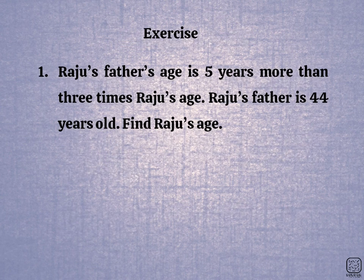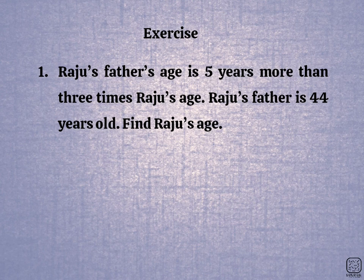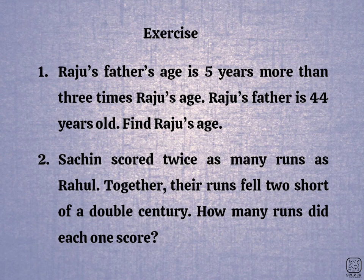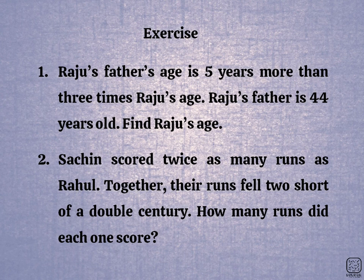How to solve this equation. Problem one: Raju's father's age is 5 years more than 3 times Raju's age. Raju's father is 44 years old. Find Raju's age. Problem two: Sachin scored twice as many runs as Rahul. Together, their runs fell too short of a double century. How many runs did each score? If you have two runs, you can score two.